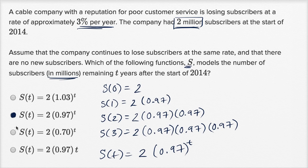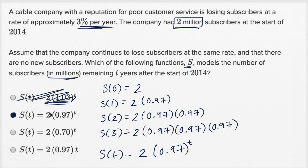Now another way you could have done it is to rule out some choices. This one actually has the subscribers growing — if you multiply by 1.03 to the T, 1.03 times 1.03 times 1.03, it's going to get larger than one. You're going to have more than two million subscribers as T increases, so you could rule that one out. In this one, every year you're only retaining 70 percent of your subscribers — you're losing 30 percent, not 3 percent. So that one's even worse than this already bad situation.